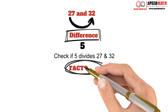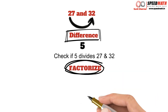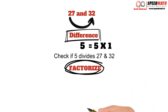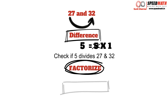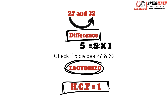So step 2: let's factorize 5. 5 can be factorized as 5 into 1, and we already know that 5 is not a factor of 27, so 5 cannot be HCF. The only factor left is 1, so therefore HCF for 27 and 32 is 1. The important takeaway here is: if you find the difference and the difference does not divide one of the numbers, try to factorize the difference and check if the factors divide the given numbers. If it doesn't, then the only factor left is 1, which would be the HCF.